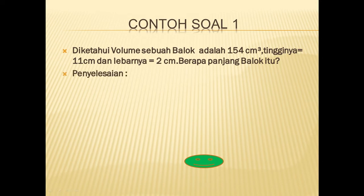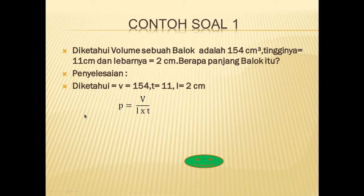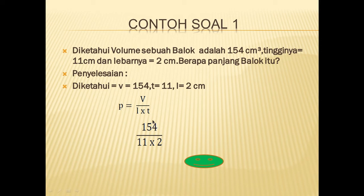Penyelesaiannya, kita tuliskan dulu apa yang diketahui: volumenya, tingginya, dan lebarnya. Panjang sama dengan volume dibagi lebar kali tinggi. Kalau sudah dituliskan rumusnya, tinggal dimasukkan angkanya. Volumenya 154. Mohon maaf terjadi kesalahan menulis ya, ini 11 kali 2, sebenarnya tingginya 11 dikali lebarnya 2. 154 dibagi 22, hasilnya adalah 7 cm.